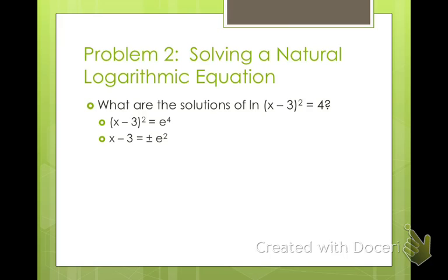Then to get x by itself, we add 3 to both sides. So 3 plus or minus e squared. This you have to put into your calculator. So put 3 plus e squared and 3 minus e squared. You should get x is about equal to 10.39 or negative 4.39. Check it. Make sure you know how to use your calculator.